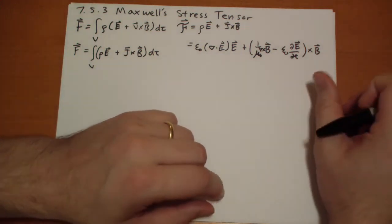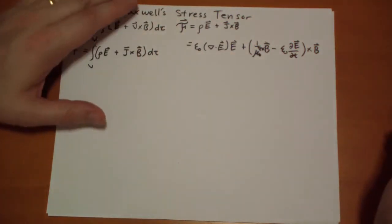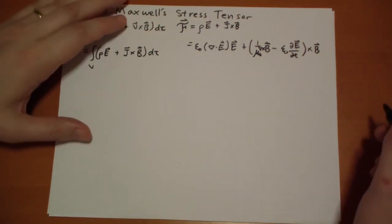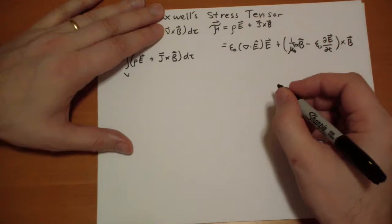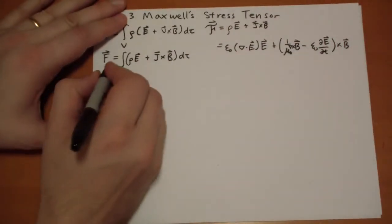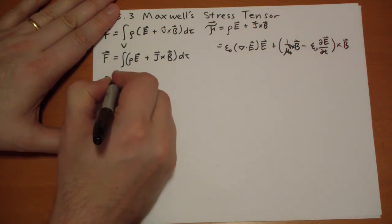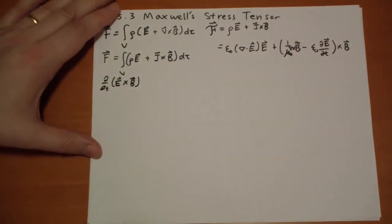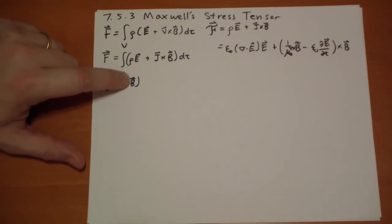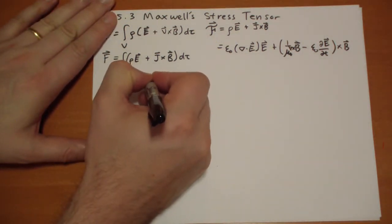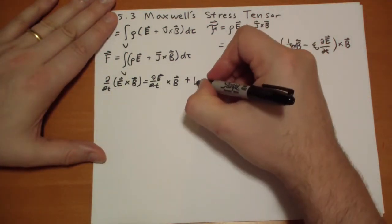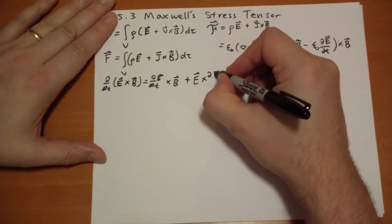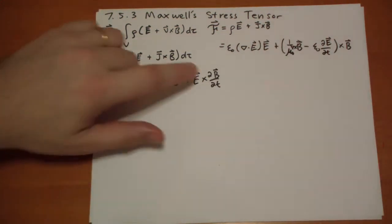Now we're going to do some singing and dancing, and looking at this term right here makes me wonder, what would happen if I took the time derivative of E cross B, which is a lot like the pointing vector without the factor of 1 over mu naught. So let's do that. D by DT of E vector cross B vector. Well, that's just the time derivative of the first cross B, plus the first times cross the time derivative of B.